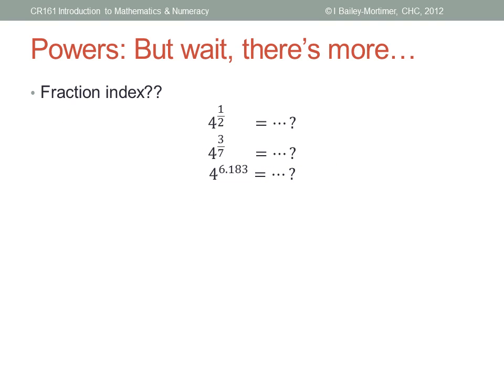But now we come to some difficult questions. What about a fraction in the index — what on earth does that mean? How can I multiply four by itself half a time, or three-sevenths of a time, or 6.183 times? The answer involves something called roots. The half power means the square root, but anything else is way beyond what we're doing here — I'll leave that story for another time.